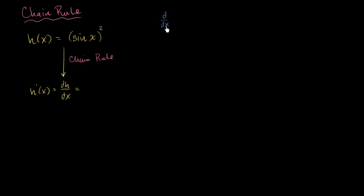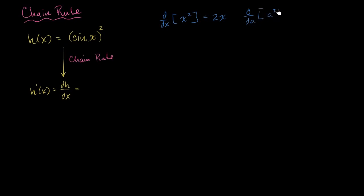If I were to ask you: what is the derivative with respect to x of x squared? Well, this gives me 2x — we've seen that many times. Now, what if I were to take the derivative with respect to a of a squared? Well, it's the exact same thing — I just swapped an a for the x's — this is still going to be equal to 2a.